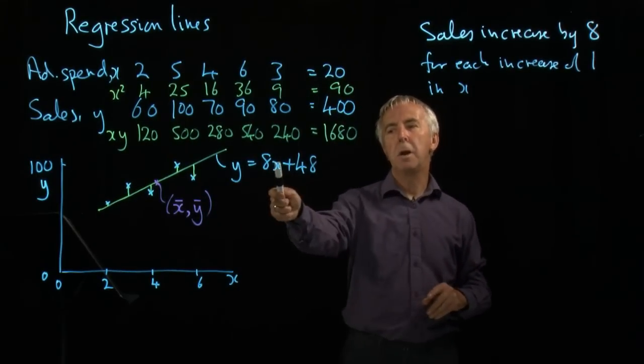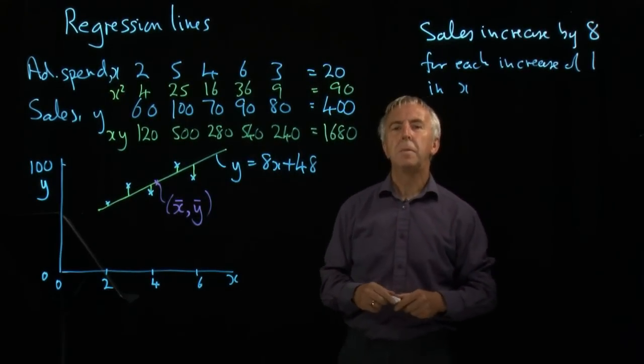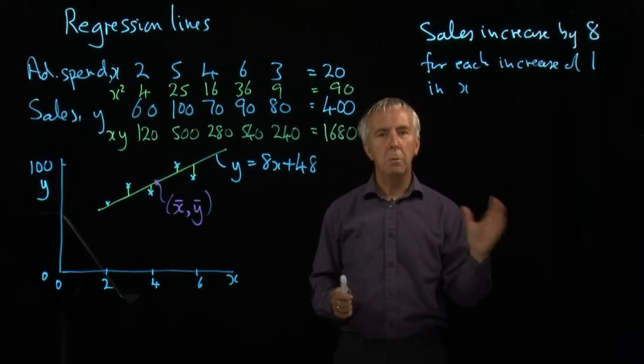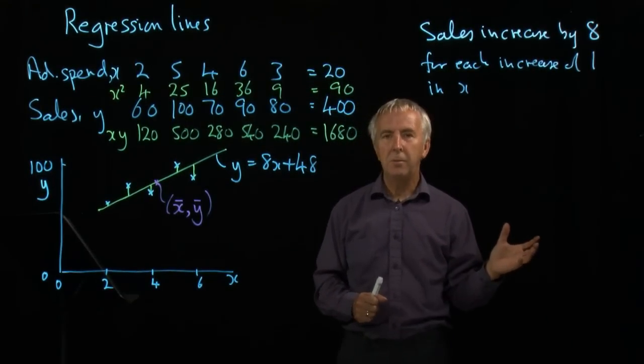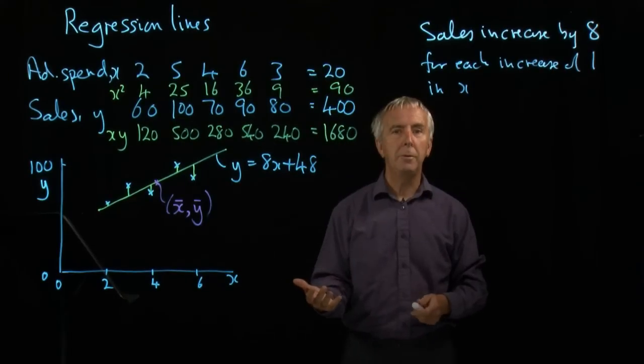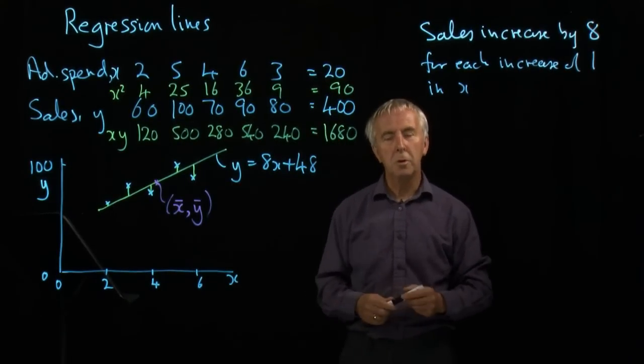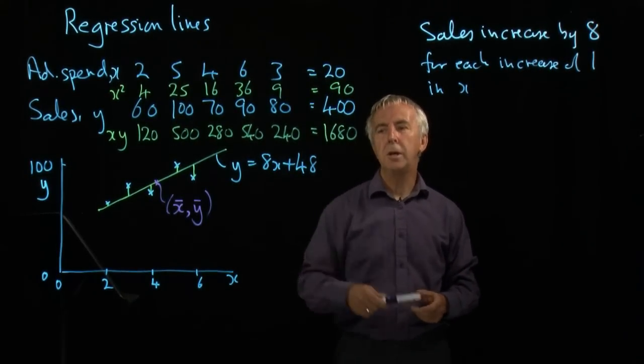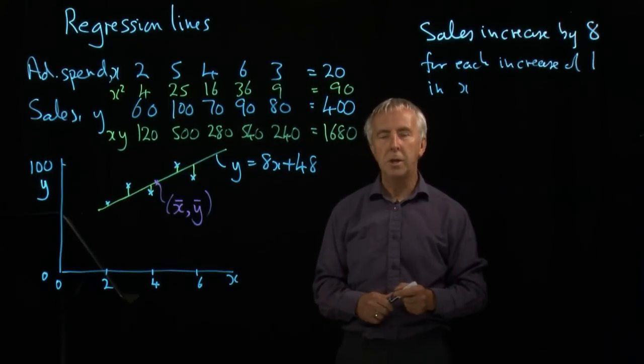If this gradient had only been 0.9, I would have been worried. I'd be spending £1,000 on advertising and getting an extra £900 sales, which isn't a good deal. So this certainly needs to be bigger than 1 in this case.